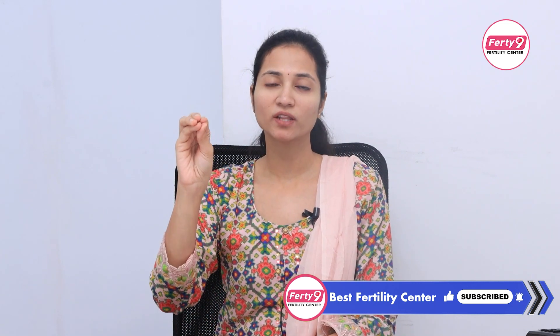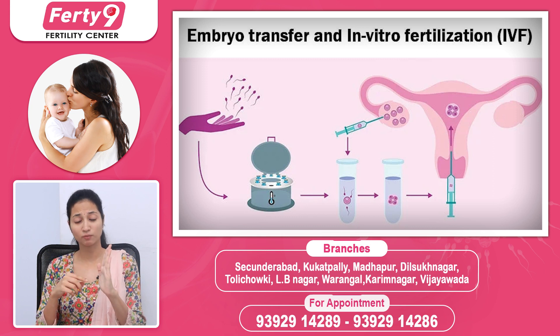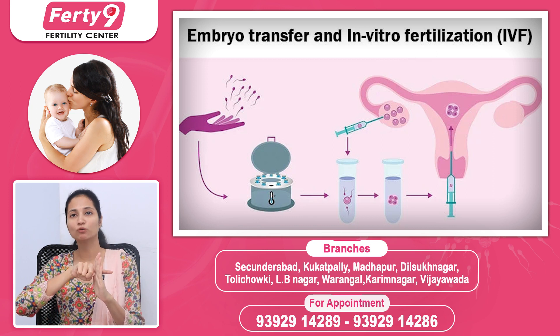When you have a uterine cavity, the embryo is dropped into the upper one-third region. The embryo attaches to the uterine lining with projections, and interstitial implantation takes place from the inside of the uterine lining.